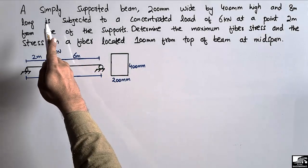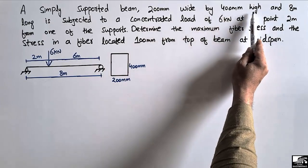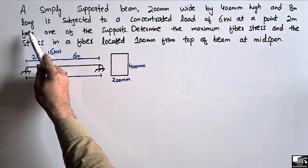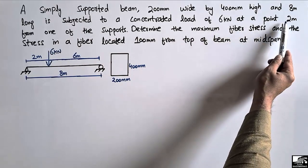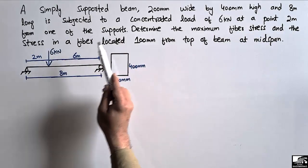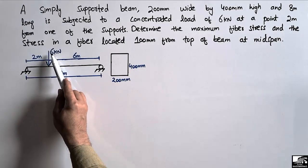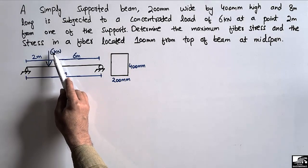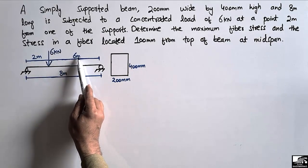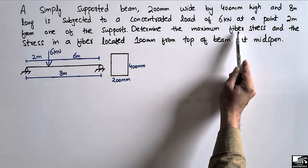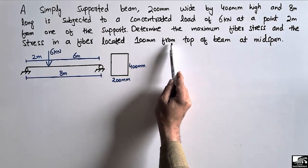The problem states that a simply supported beam, 200 millimeter wide by 400 millimeter high and 8 meter long, is subjected to a concentrated load of 6 kilonewton at a point 2 meter from one of the supports. The other distance is 6 meter. We need to determine the maximum fiber stress and the stress in a fiber located 100 millimeter from the top of the beam at mid span.